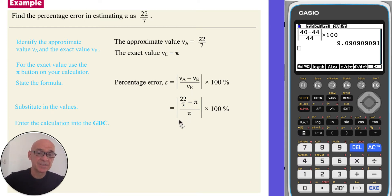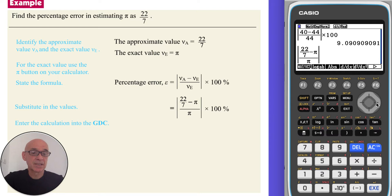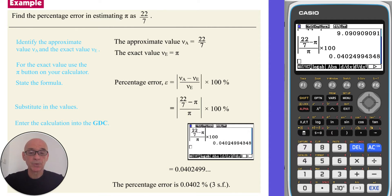Entering the calculation into the calculator: press F3 for the absolute value function, then the fraction button to set up a fraction — 22 over 7 in the numerator. Move the cursor down over 7, then right cursor to bring it back up. Subtract and press Shift to access pi. Down cursor to the denominator, and again Shift to access pi. Press the right cursor twice to get outside the absolute value signs, then multiply by 100 and press Execute. Rounding to three significant figures gives a percentage error of 0.0402%.